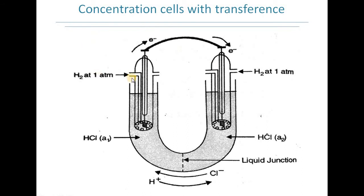Taking the example of hydrogen gas electrode concentration cells with transference: hydrogen at 1 atmosphere is in contact with HCl solution of activity A1 on the left, and hydrogen at 1 atmosphere is in contact with HCl solution of activity A2 on the right. These solutions are in direct contact through the permeable partition — the liquid junction. At the left, electrons are released producing excess hydrogen ions that move from left to right through the liquid junction, while excess chloride ions on the right move left to complete the inner circuit.